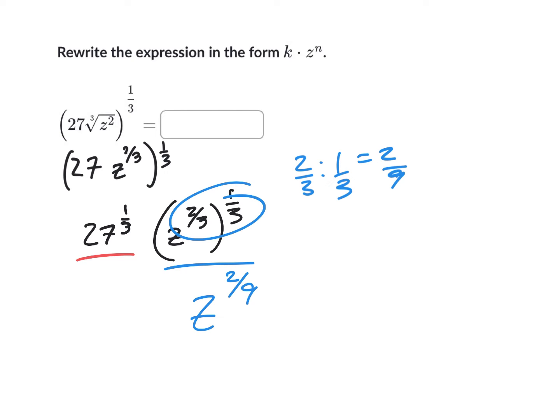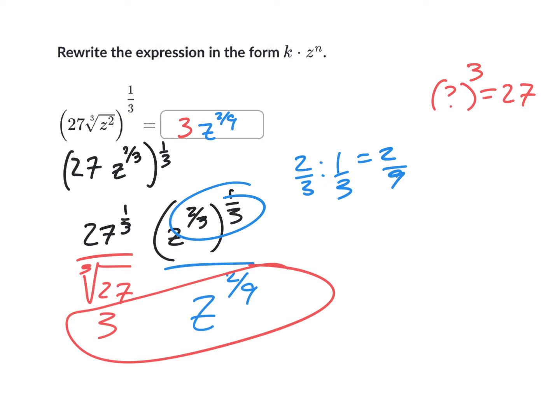All right, now let's play with 27 to the one-third. What that really means, we could go back to radical form. That really means the third root of 27. So the third root of something just means what to the third power equals 27? Well, third root of 27 is three. So the answer here is three z to the two-ninths. That's it.